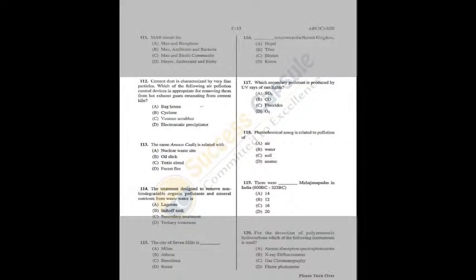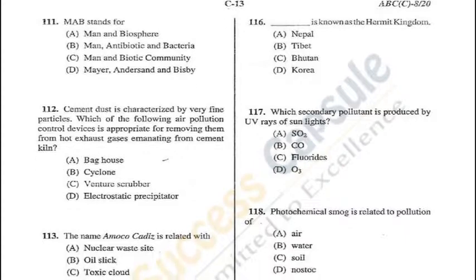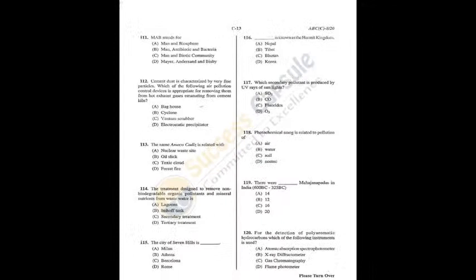Question 111: MAB stands for Man and Biosphere Programme, which was launched in 1971 by UNESCO — A is the correct answer. Question 112: Cement dust is characterized by very fine particles. For removing them from hot exhaust gases from cement kilns, a cyclone collector is used — B is the correct answer.